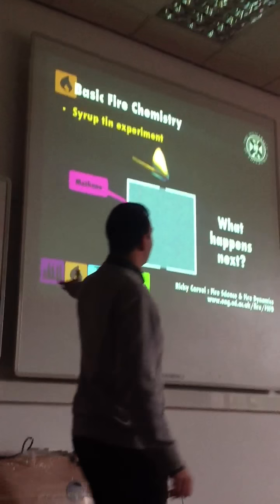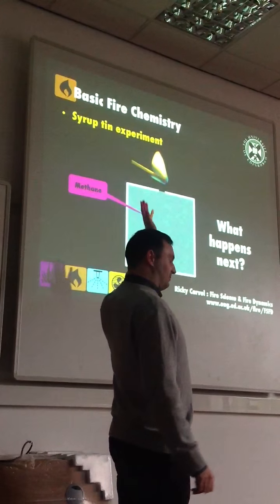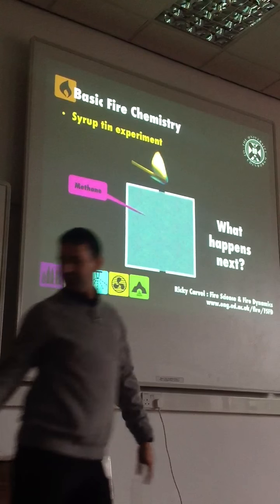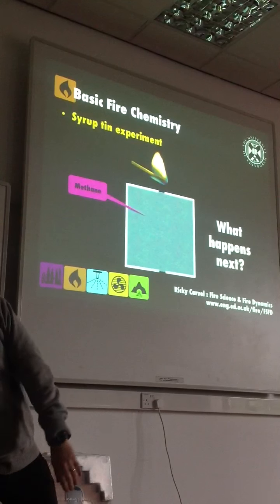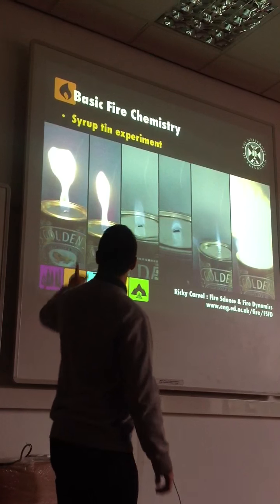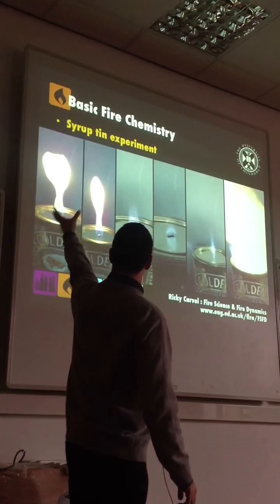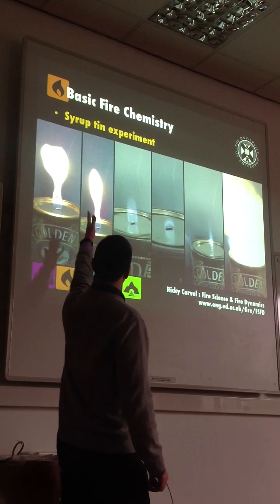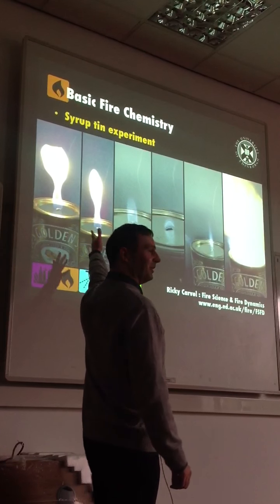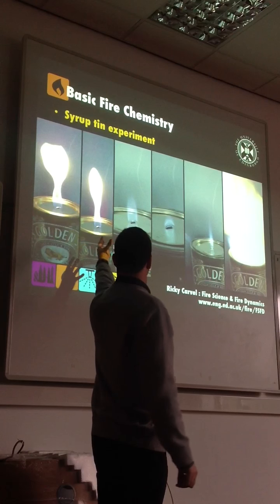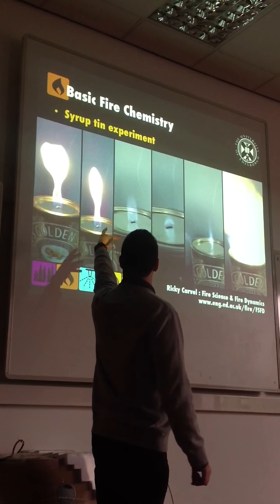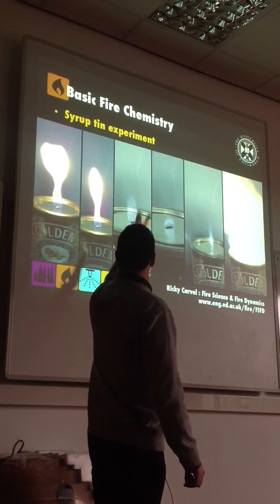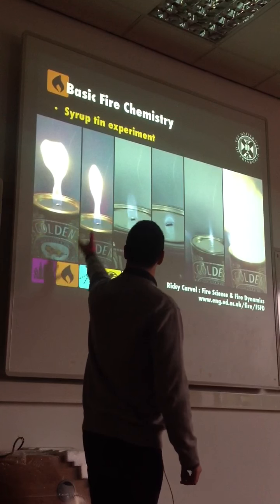So what happened was the very buoyant methane streamed out at the top, we had a big flame — I can show you the sequence — we had a big flame that pulsed, and then it kind of diminished a bit. Once there was more oxygen in there, it was less buoyant, so it had a more well-defined flame shape.